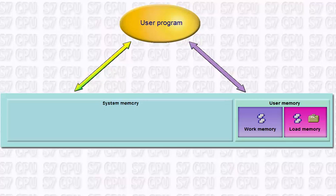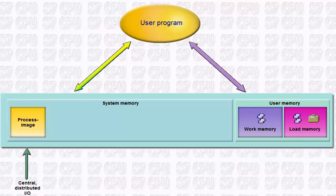The system memory contains the following sections. The process image, which is the interface to inputs and outputs of the module. At the beginning of each program cycle, the operating system automatically ensures that the complete image of all parameterized inputs and outputs is updated and their status filed in the so-called process image.